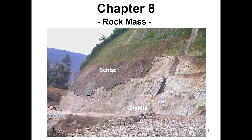For Chapter 8, the title is Rock Mass. What is rock mass? Rock mass means we have, for example, a slope exposed like this — you can see these are outcrops. This is a granite outcrop, and this is a type of metamorphic rock. We call that rock mass. In terms of volume, it is a larger volume compared to the intact rock. Intact rock was discussed in Chapter 7, where we tested small rock samples — we call that intact rock.